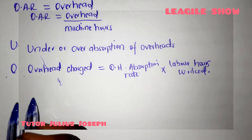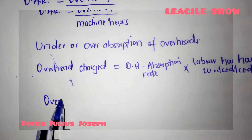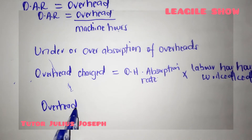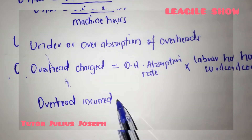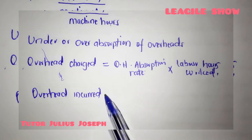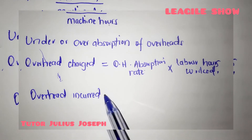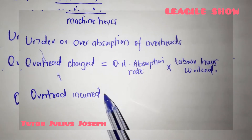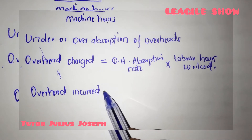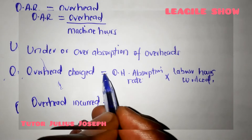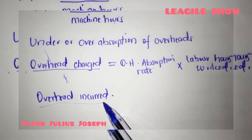The next thing to check is something called overhead incurred. The overhead incurred will be given to you in the question. To determine whether it is over or under absorbed, you compare the overhead charged and the overhead incurred.